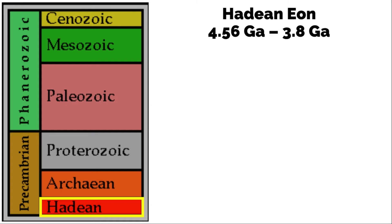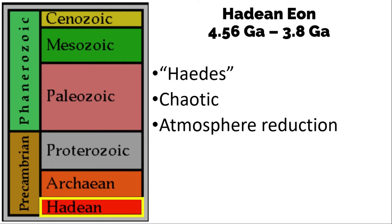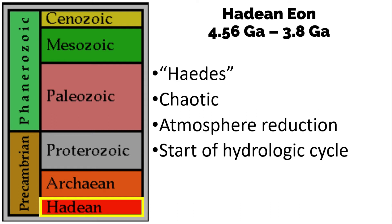Under this era, we have the Hadean Eon, from 4.6 GA to 3.8 GA. It comes from the root word Hades, the Greek god of the underworld. This is considered a chaotic time because of several meteorite bombardments. The atmosphere is mainly composed of methane, ammonia, and carbon dioxide. Another important event is the start of the hydrologic cycle and the formation of world oceans. Even though the environment was hostile, life still emerged.